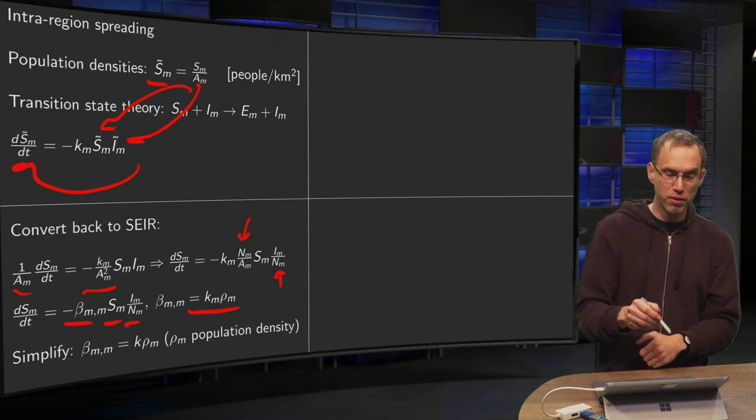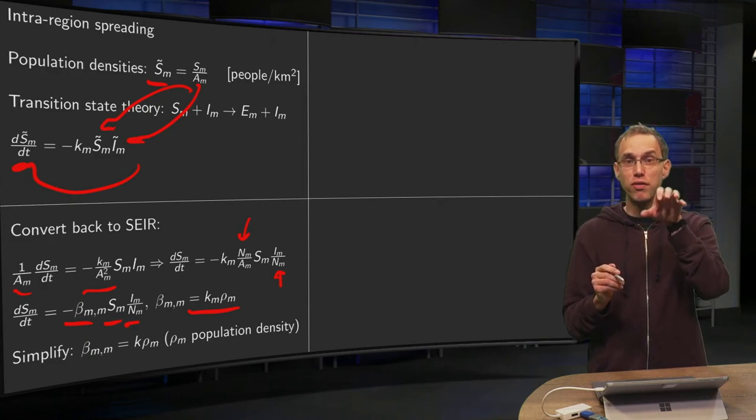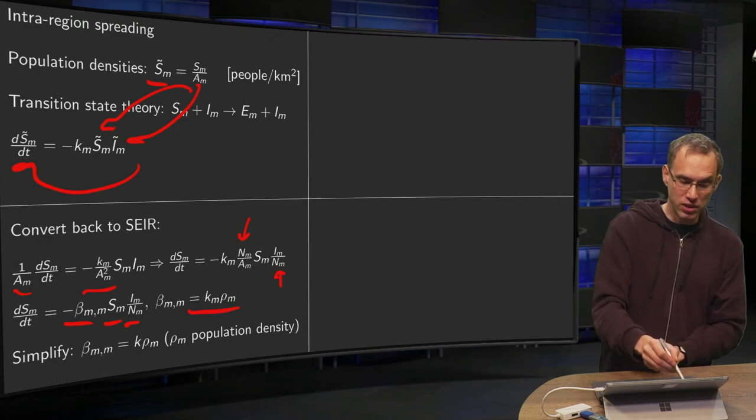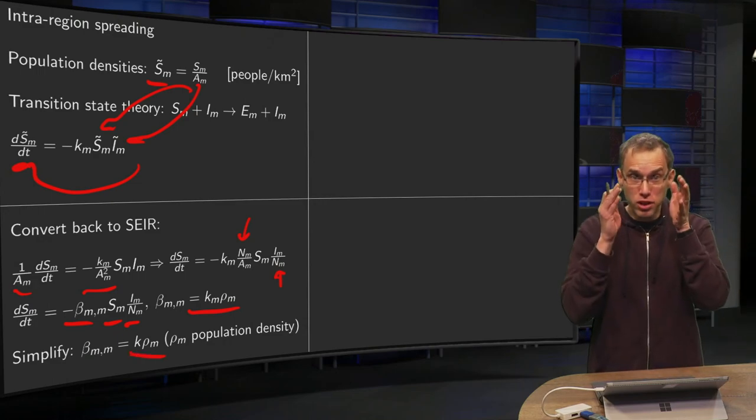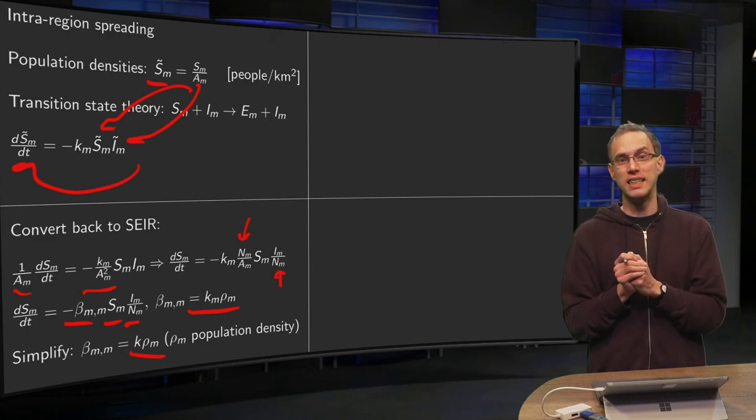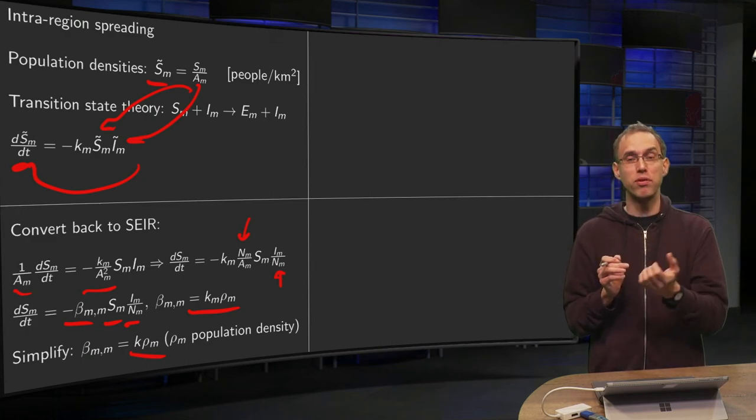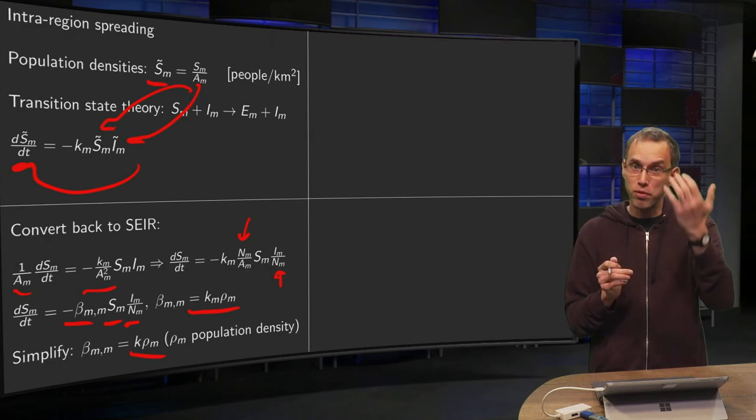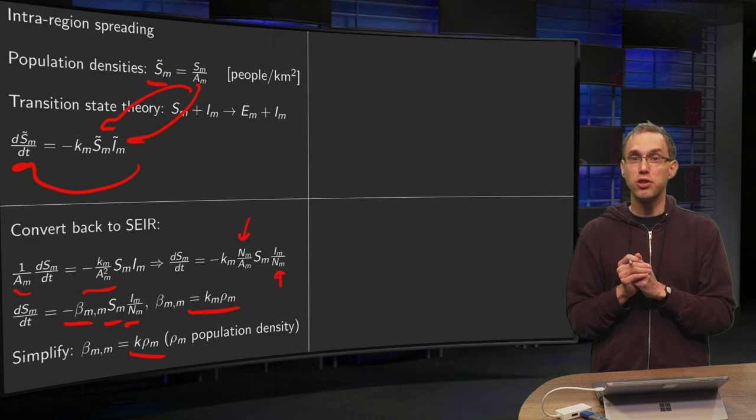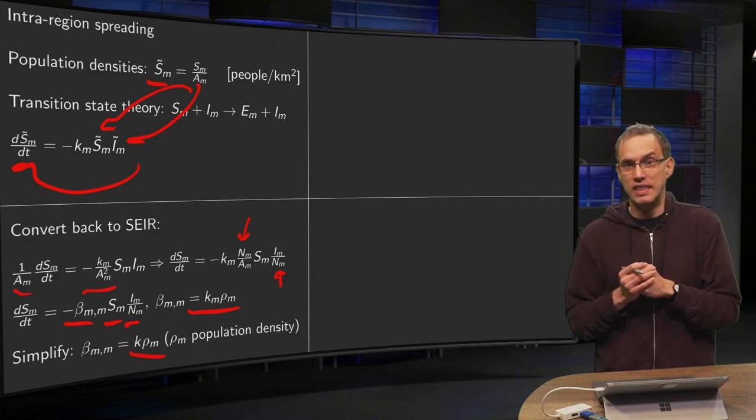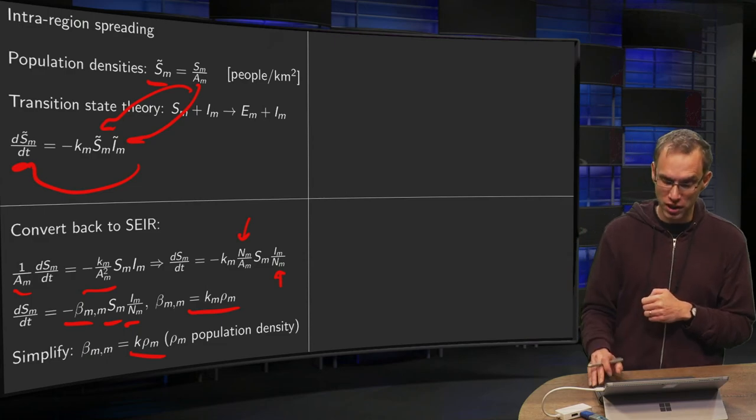So what you get is that your beta for your intra-region spreading basically becomes some reaction constant k times your population density. Now we simplify a bit further and take the same reaction coefficient for all your regions. Your beta does depend on your specific region, but only via the population density, which means that in a twice as large populated region, your number of contacts is also twice as large.